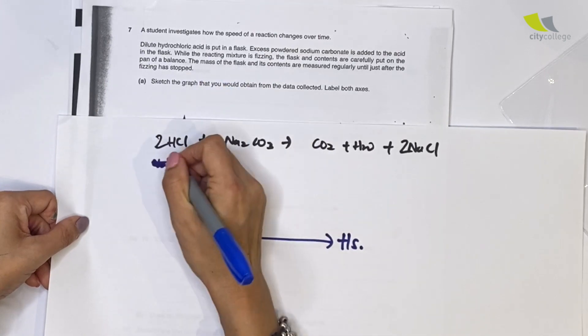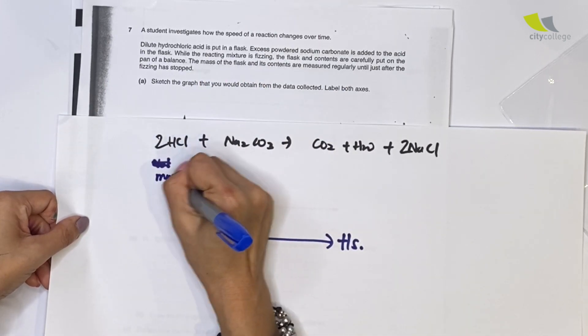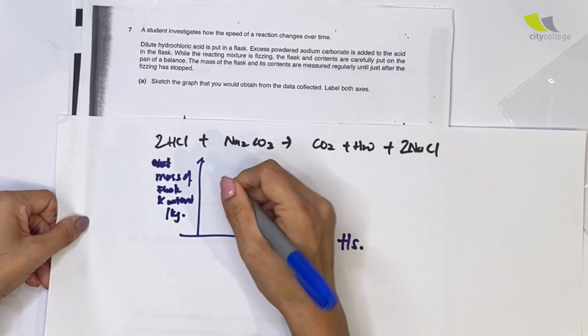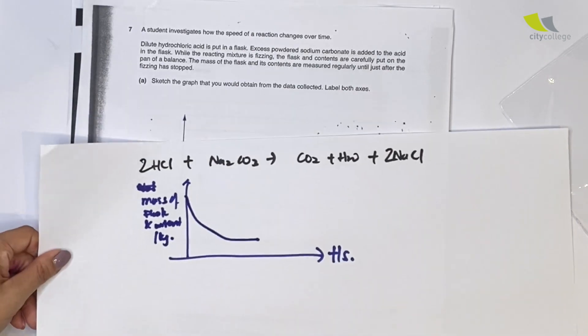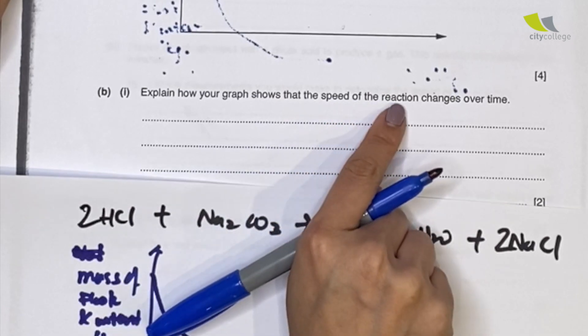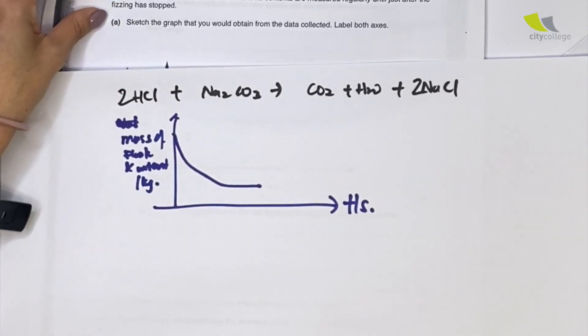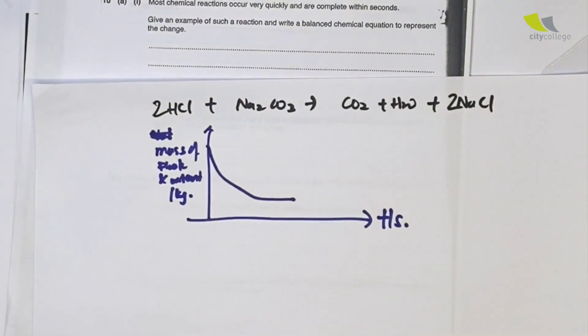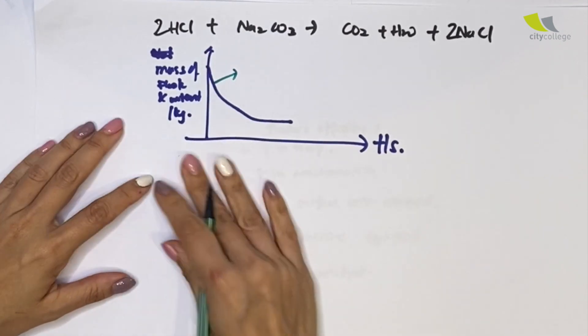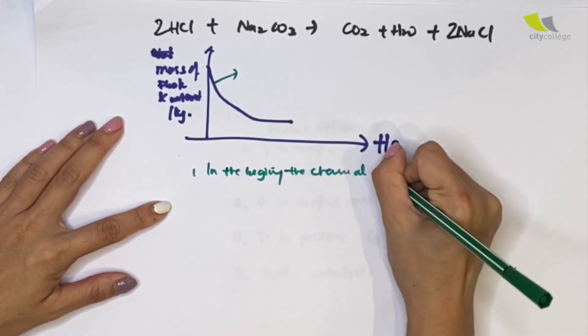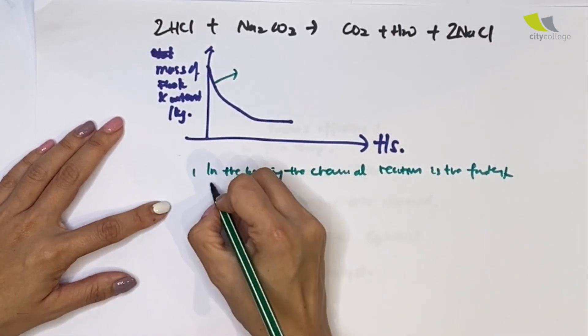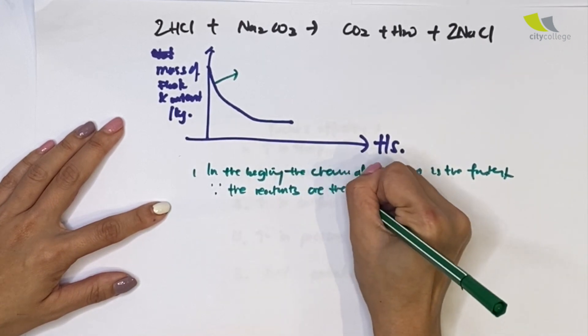They have the axes over here, so I'm going to redraw it. It will look something like this: t per second, the mass of flask and content in kg, going from here all the way down. And label both axes. I'm done. Explain how your graph shows that the speed of the reaction changes over time. Firstly, in the beginning, the chemical reaction is the fastest. Why is that so? Because the reactants have their maximum concentration.